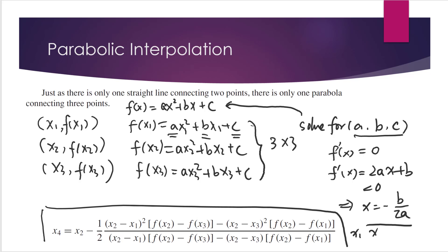The process works as follows: based on x1, x2, x3, we find x4 using the formula. Then based on x2, x3, x4, we can find x5. We continue this iteration over and over again until we are close enough to the true optimum.